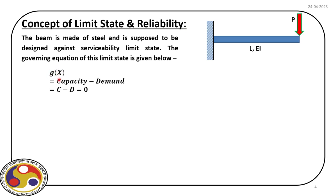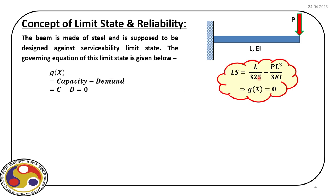This gives us the mathematical framework to define what we call a limit state. A limit state g(x) is nothing but the difference between capacity and demand. When this is equal to zero, it is just at the verge of failure; when demand crosses the capacity, it fails. In this case we consider deformation at the free end. We have an allowable deformation — let us consider L/325 as the allowable deformation, as often specified in codal provisions. We apply the point load, and from structural analysis we find the exact deformation at the free end. Using these two, we define our limit state.